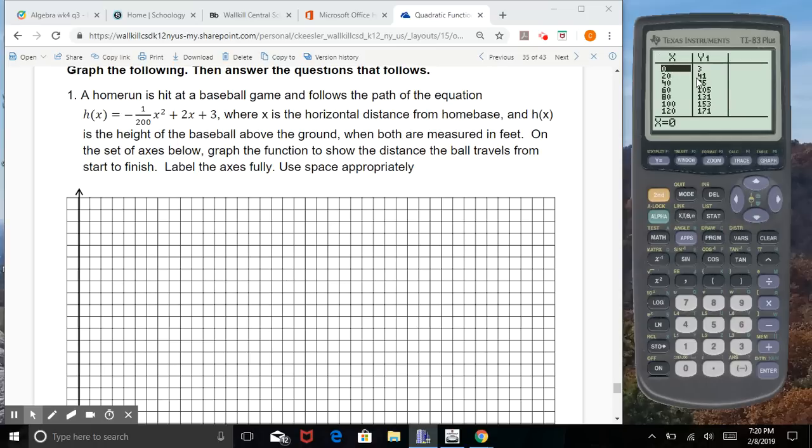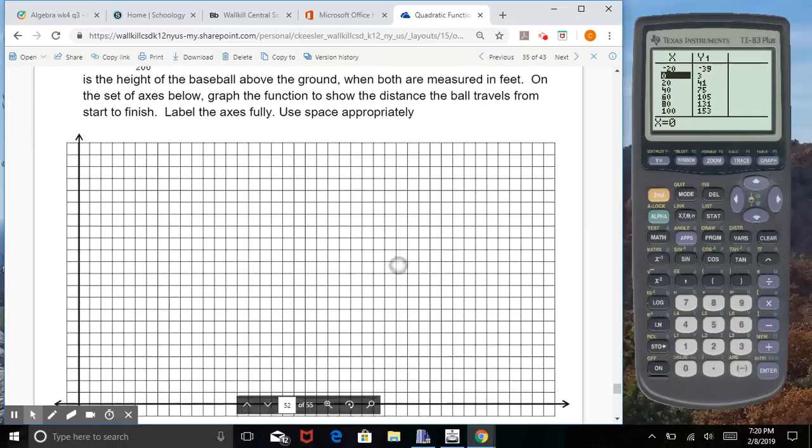Now, if I do that, I have 0, 3, and I have all whole number values. And if I scroll down, I found my vertex, 200 and 203, and 400 and 3 as being the last value here that I would graph. So I know that my x-axis has to go to 400, and my y-axis has to go at least to 203. So I'm going to start setting up my graph.